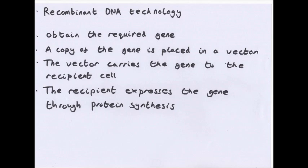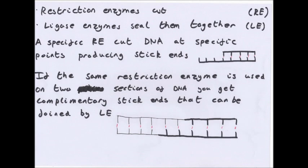On page 174 of your textbooks they give you stages in engineering processes and methods possible. We look at lots of these in a lot more detail later. The next things are restriction enzymes, which I'm calling RE, and ligase, which are LE.